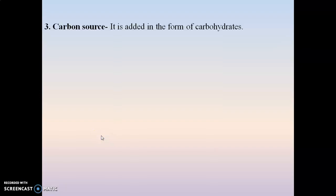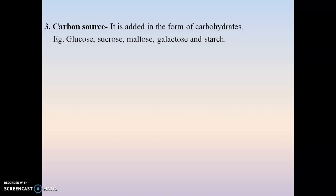The third source is the carbon source, added in the form of carbohydrates. Examples include glucose, sucrose, maltose, galactose, and starch. Sucrose and glucose are commonly used as a source of energy, while lactose, maltose, galactose, and starch are rarely used. Sucrose at a concentration of 2–5% is used as the carbon source. During autoclaving or sterilization, sucrose — being a disaccharide — gets hydrolyzed into glucose and fructose, which are then used for tissue growth. Plant cells in culture first utilize glucose, then fructose, as the carbon source.